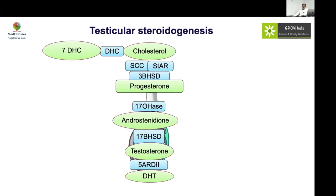Various enzyme defects cause XY DSD: 17-hydroxylase deficiency (associated with hypertension), 17β-HSD (complete sex reversal), and 5-alpha reductase — along with StAR and side-chain cleavage deficiencies in more severe forms like Smith-Lemli-Opitz syndrome. DHT acts upon the androgen receptor, while testosterone is aromatized to estradiol.